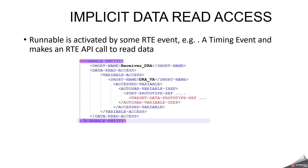First, we can start with implicit data read access. In implicit data read access, you can use the data read access tag. The runnable is activated by some RTE event — for example, a timing event — and makes an RTE API call to read data. When you want to deal with data read access, it will be done via implicit data read access. You have to mention the port prototype reference and use the data read access tag. I will show whatever API will be generated by RTE in the case of implicit data read access.